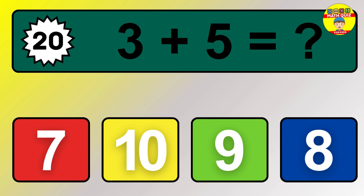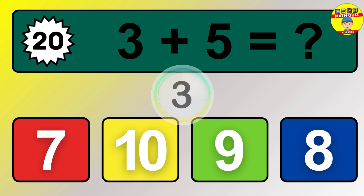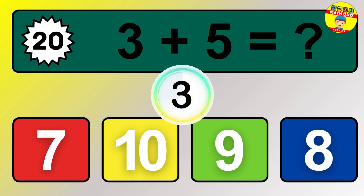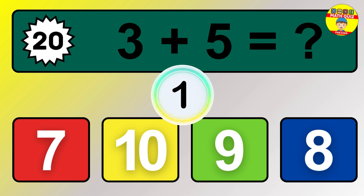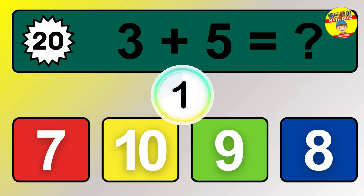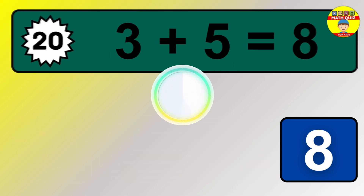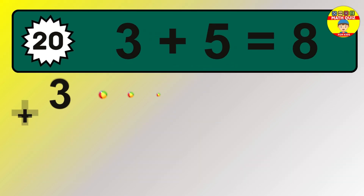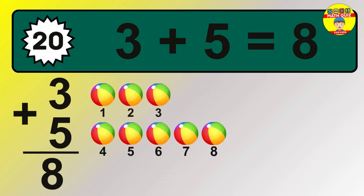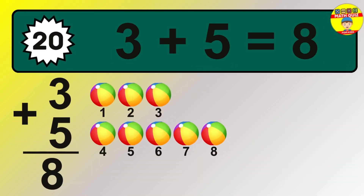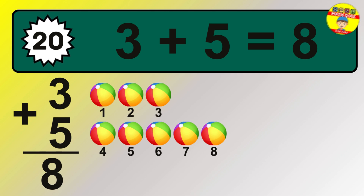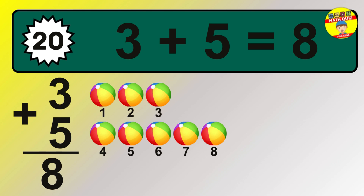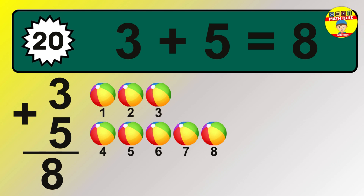Question 20. 3 plus 5 equals what? So the answer is 3 plus 5 is 8. Let's count it. 1, 2, 3, 4, 5, 6, 7, 8.